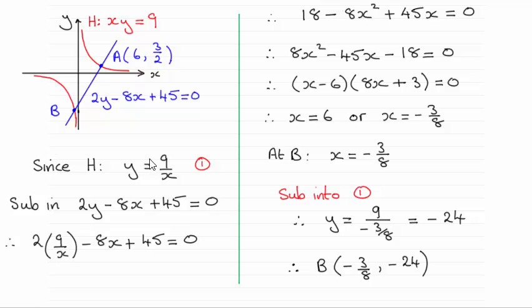So what I've done is rearranged the equation for the hyperbola, y equals 9 over x, and substituted it into the equation for the normal. So we get an equation in terms of x.